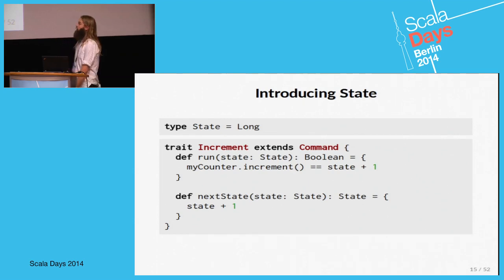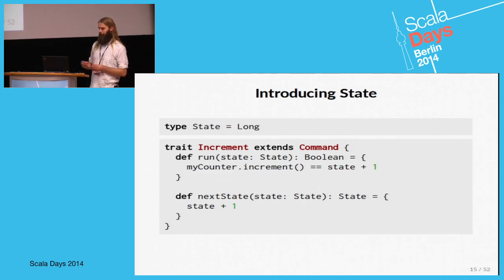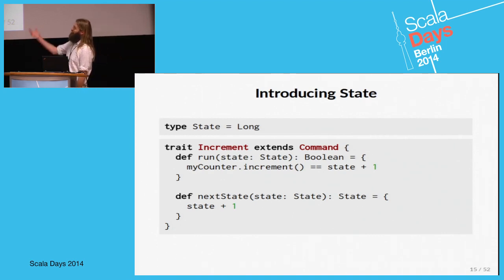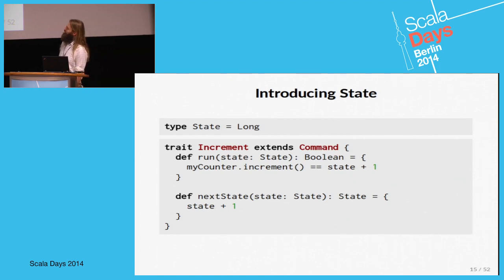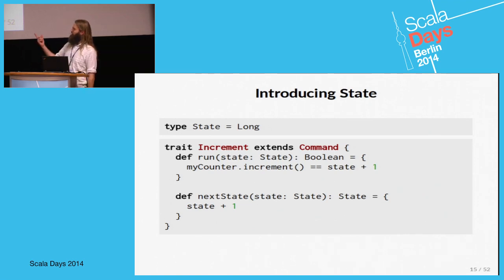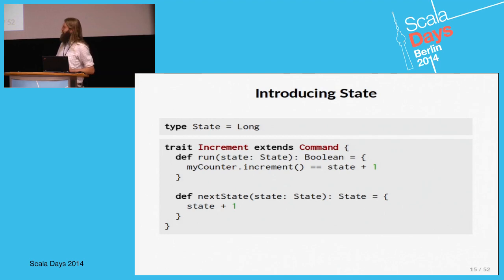So we need something more. We need to introduce a state that we can use to represent the real state of the system. In this case our state is just a long value representing the current value of the counter. Now the command model gets a bit more complex — the run method takes the state, and we can verify that what we get back from the real system makes sense with the current state. We also need to create an updated state version so that the next commands have the correct state to check against.